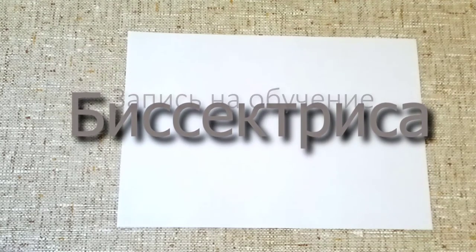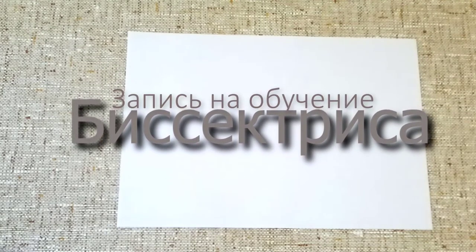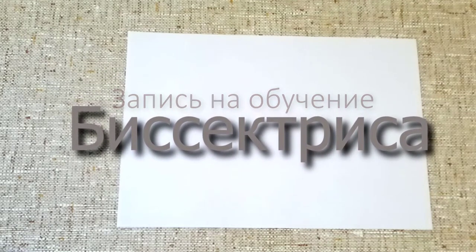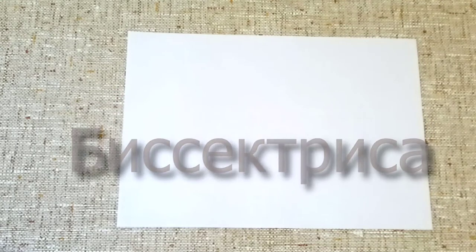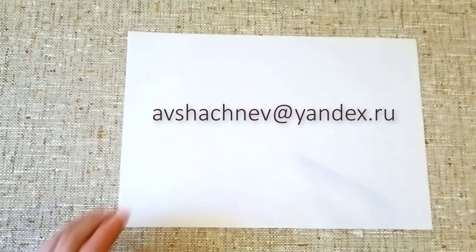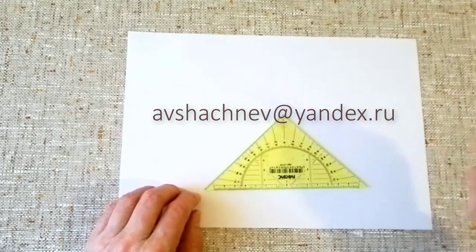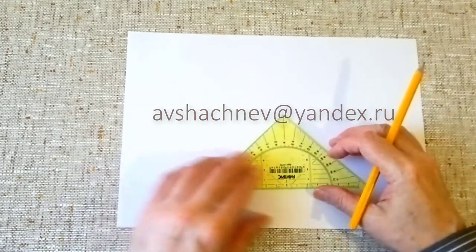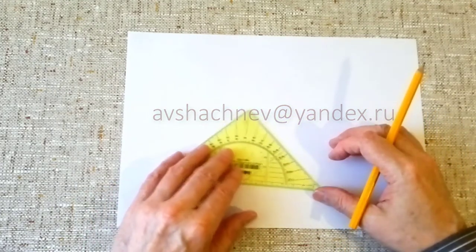Теперь приступаем ко второму способу, как найти бисектрису. Допустим, у нас нет циркуля, и есть только треугольник. Измерили угол ската крыши, нашли угол – он больше 90 градусов, и кроме такого треугольника у нас ничего нет.